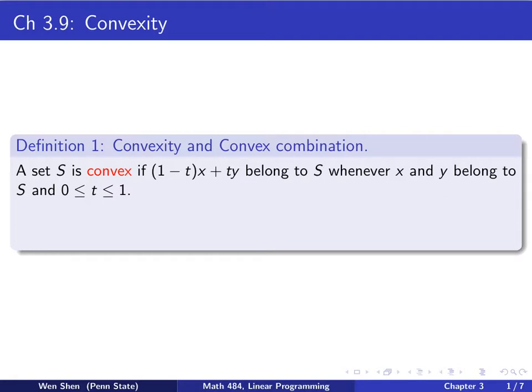We'll talk about definition of convexity. So if you're given a set S, the set is called convex if the following statement is true. That is, (1-t)x + ty belong to S, whenever x and y belong to S, and t takes value between 0 and 1. In other words, if you have two elements x and y that belong to the set S, and then take any value t between 0 and 1, and you add them up in this way, this element will also be in the same set. Then the set is called a convex set.